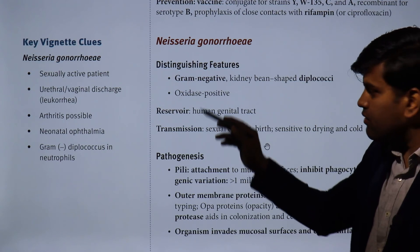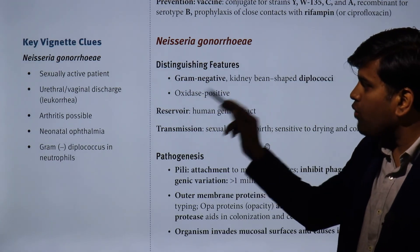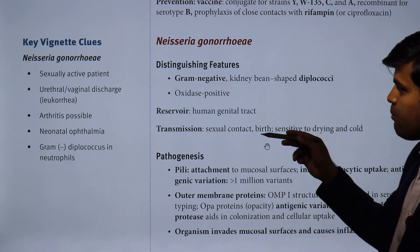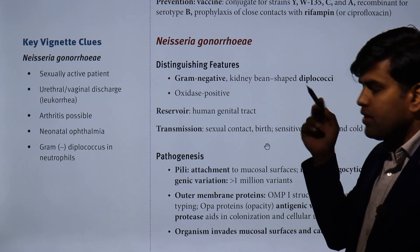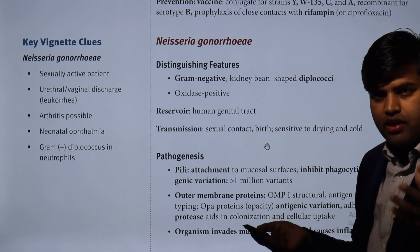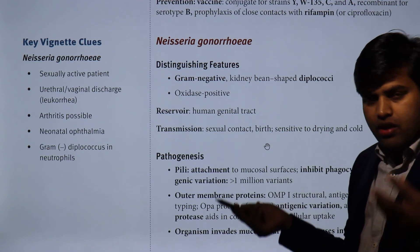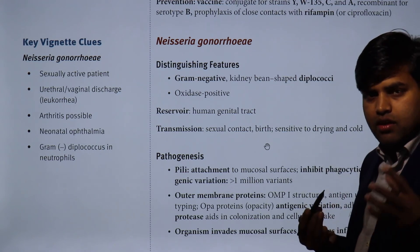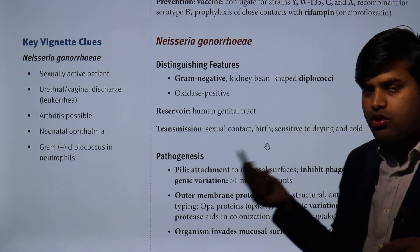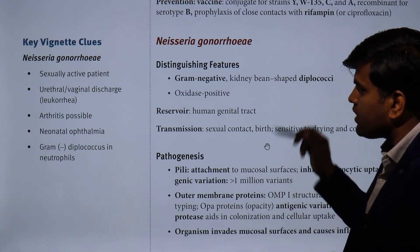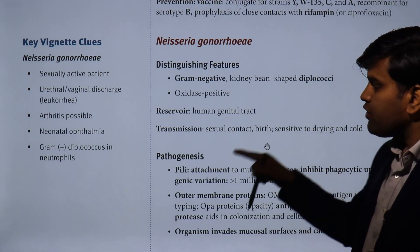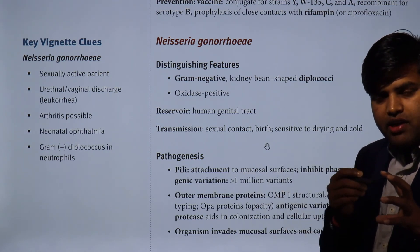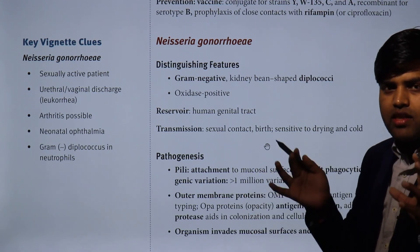N. gonorrhoeae is a disease of sexually active patients. Clinical presentation includes urethral or vaginal discharge that is white — called leukorrhea. Arthritis is a possible complication. Neonatal ophthalmia is possible: if the mother has N. gonorrhoeae in the birth canal, during delivery the baby carries the organism and can develop eye infection leading to blindness. Diagnosis shows gram-negative diplococci in neutrophils — they are notably intracellular, found inside neutrophils as well as extracellularly.